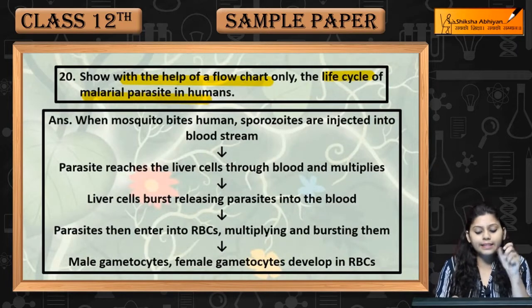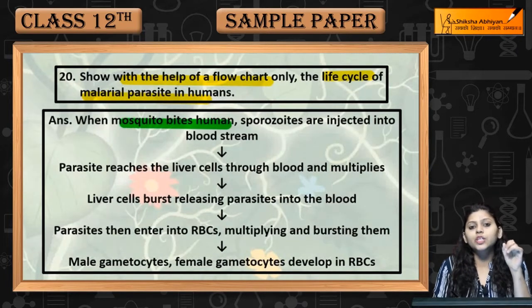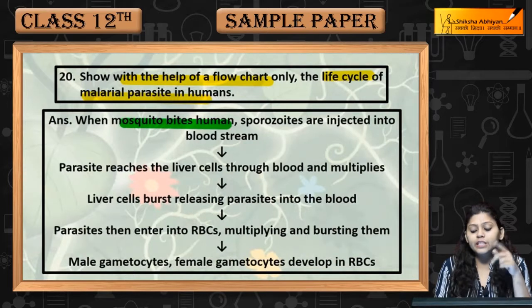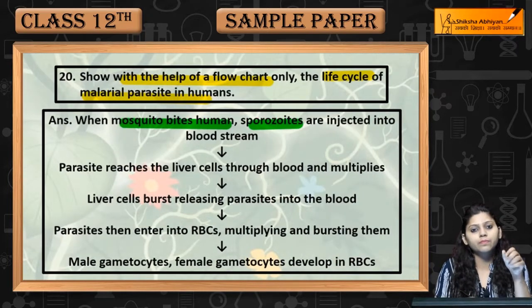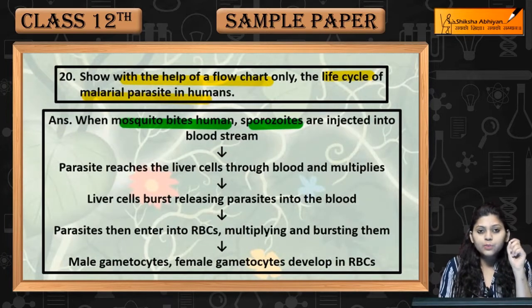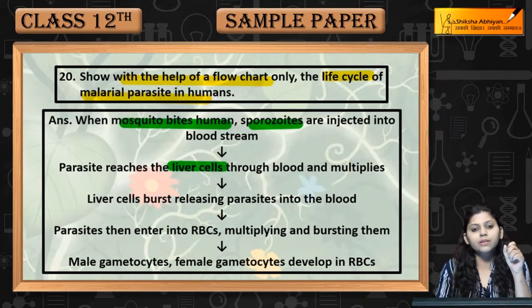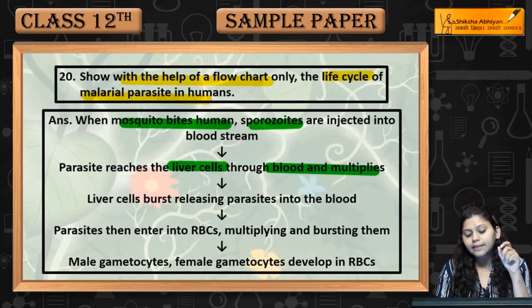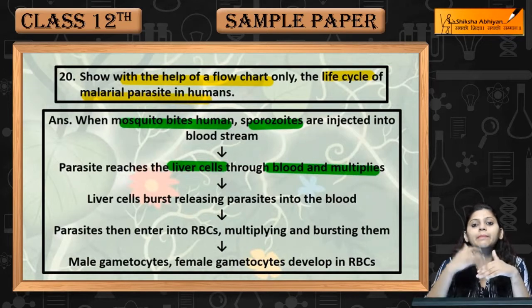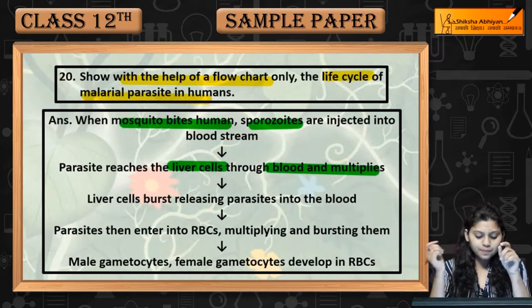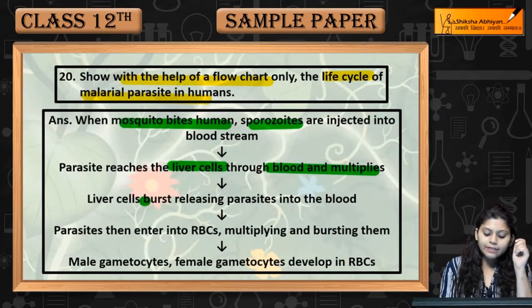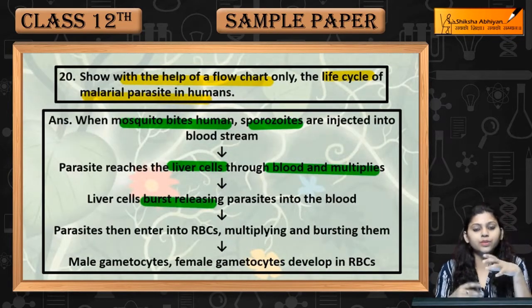Mosquito bite karta hai human ko — sporozoites injected into the bloodstream. Sporozoites reach karte hain liver cells mein through blood, aur wahaan pe multiply karte hain.